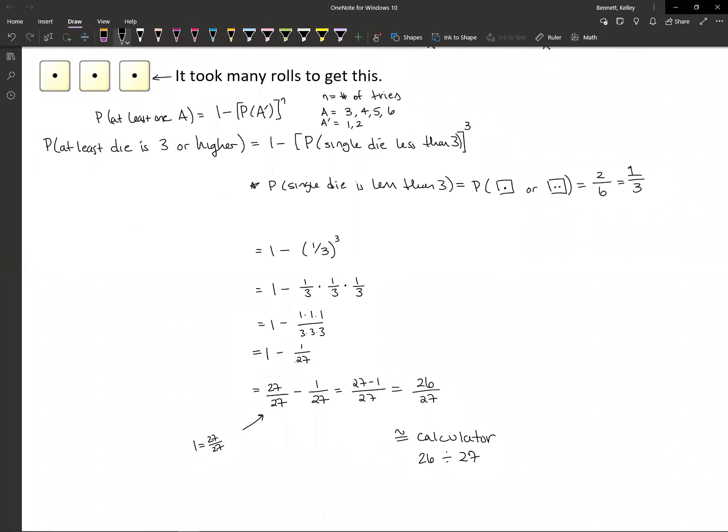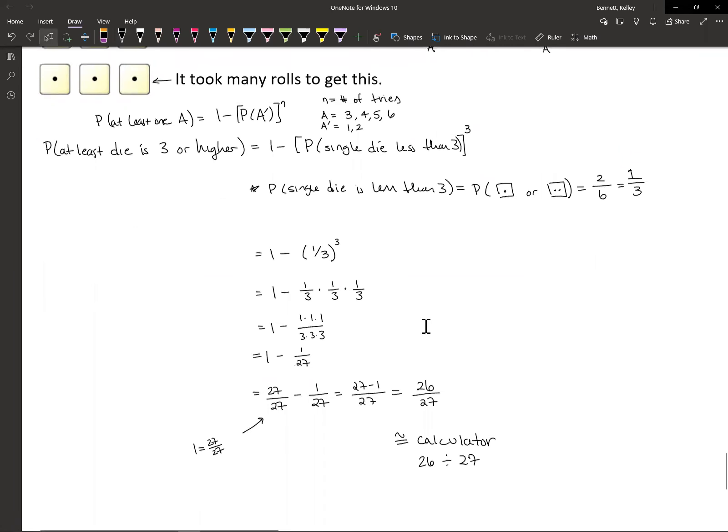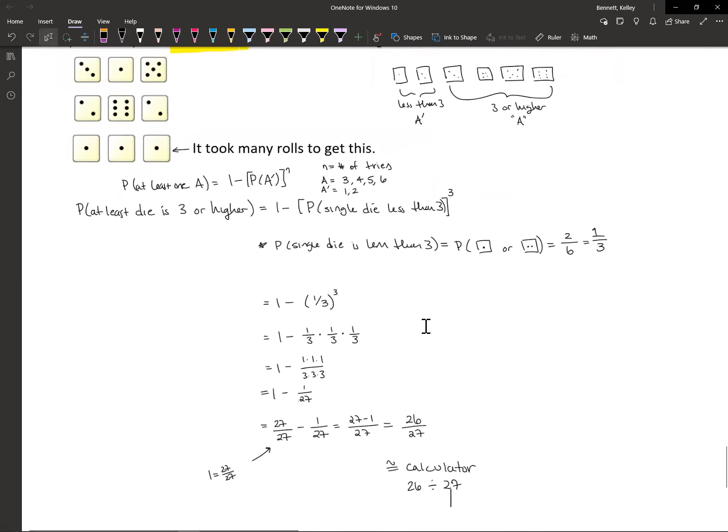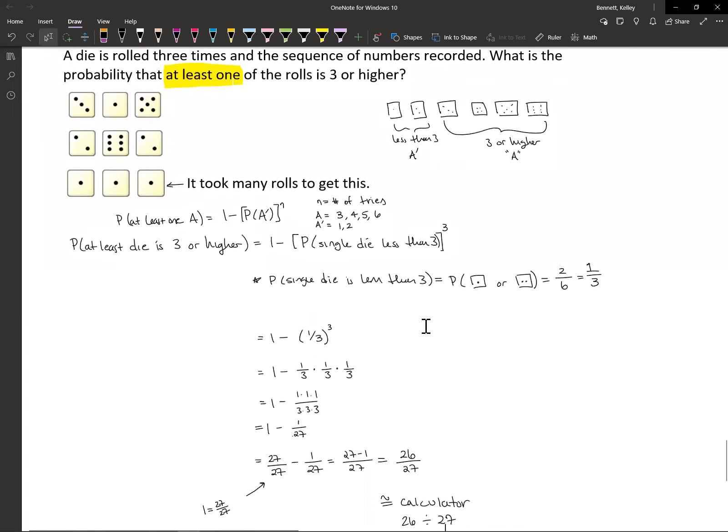In any case, you can see that 26 divided by 27, that's a number that's close to one in terms of probability. And when we were doing our simulation, we saw that we kept on having roles where we had a three or higher in there every time. Our first two roles for sure, then we did a bunch of experiments after that, and it took us a lot of roles to get one that didn't have anything with three or higher.